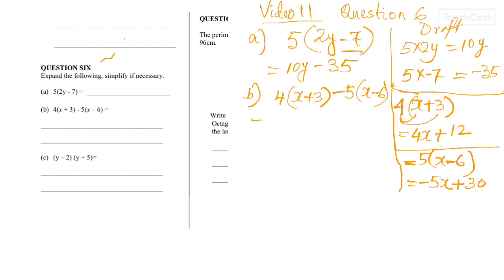Now, I'm going to put them together. 4x plus 12 minus 5x from here plus 30. And I add and subtract the like terms. That will give you negative x. And these two will give me 42.